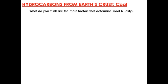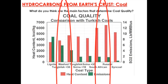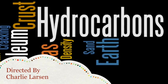What are the main factors that determine coal quality? There are three: heat content, coal content, and sulfur dioxide emissions. The more heat content and the less sulfur dioxide emissions, the better the quality. As you can see in the graph, it turns from left to right into a better quality coal. Thank you for watching.